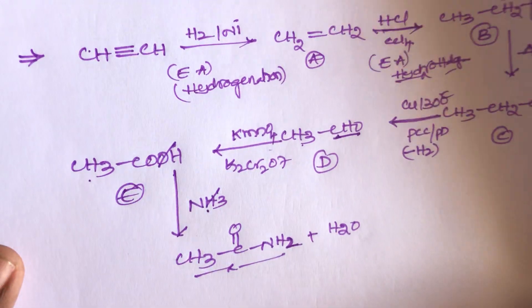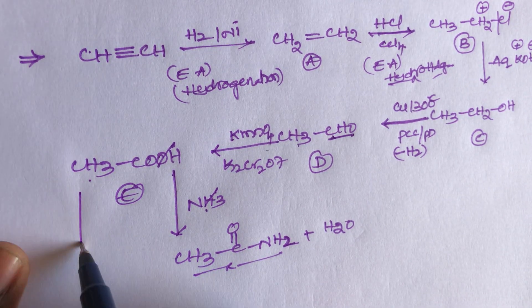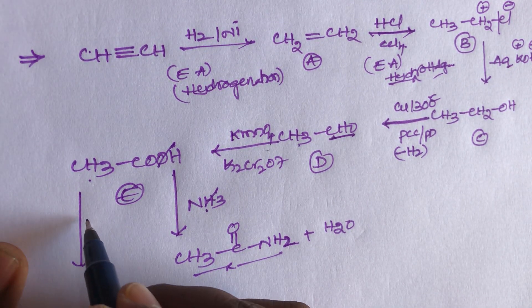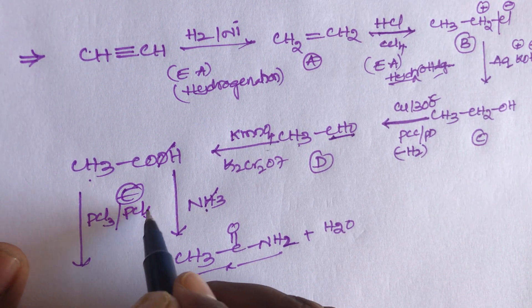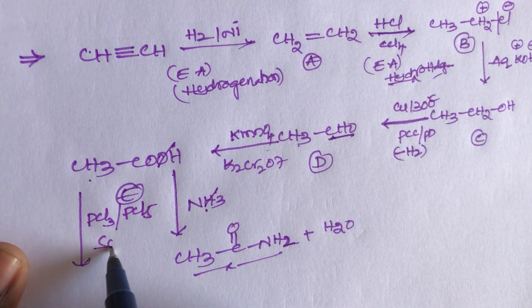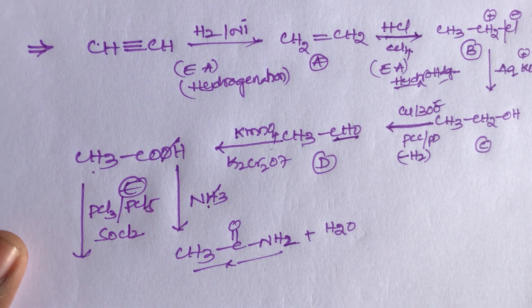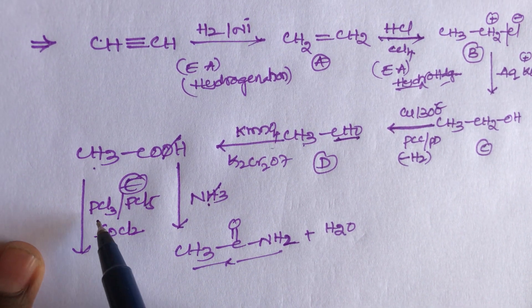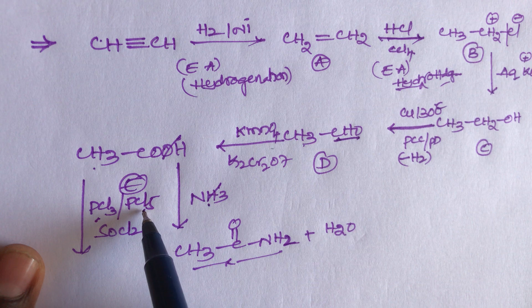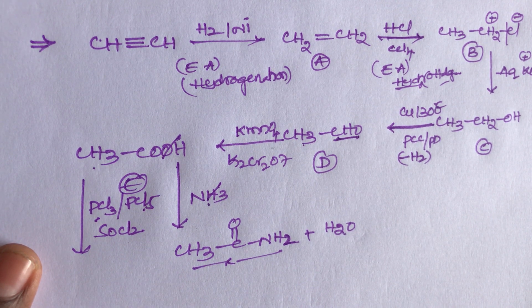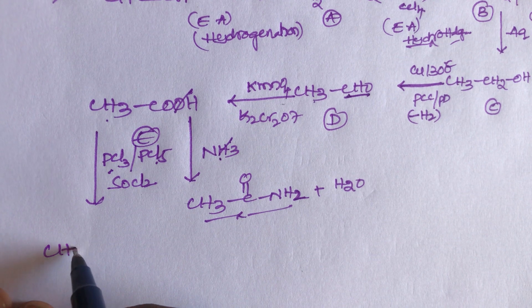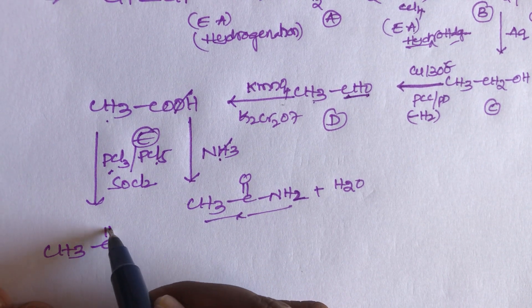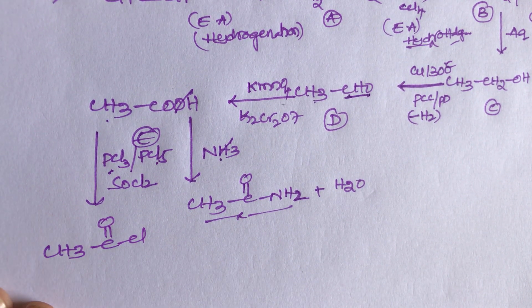Similarly, this carboxylic acid reacts with PCl₃ or PCl₅ or SOCl₂ — you can take any of these reagents. We get acid chloride — the product CH₃COCl will be formed.